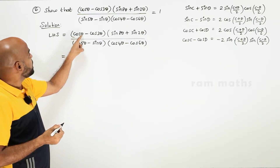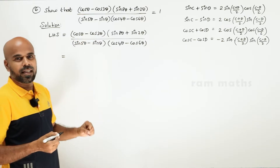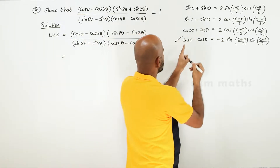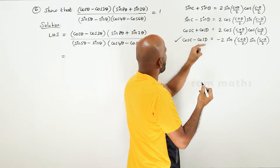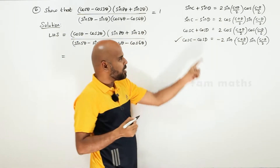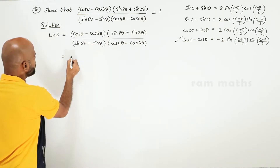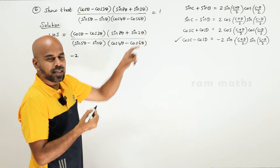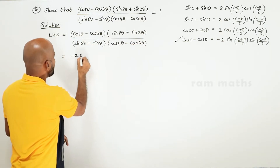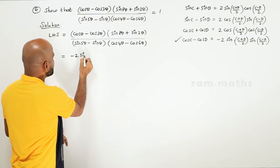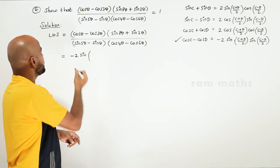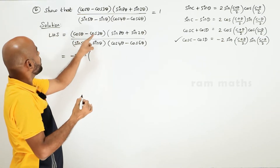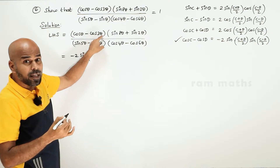The formula for cos C minus cos D is: minus 2 into sin of (C plus D) by 2, into sin of (C minus D) by 2. Here, C is substituted as theta and D as 3 theta.